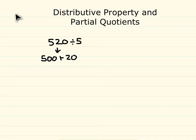This way we can divide each of these by 5. For example, so now we have 500 divided by 5 and we have 20 divided by 5. Both of these answers put together will give us our overall quotient.